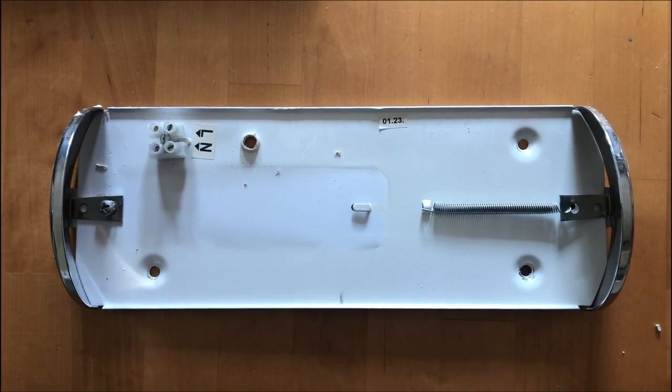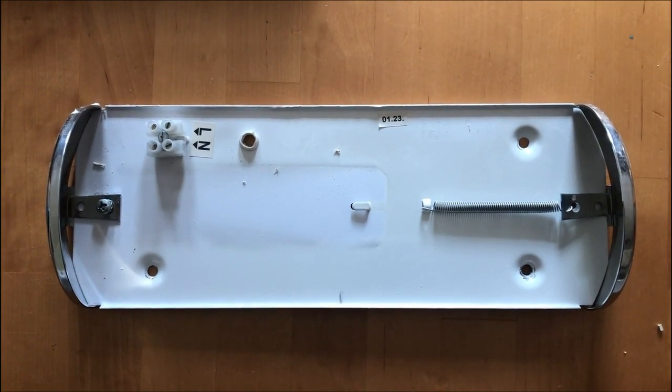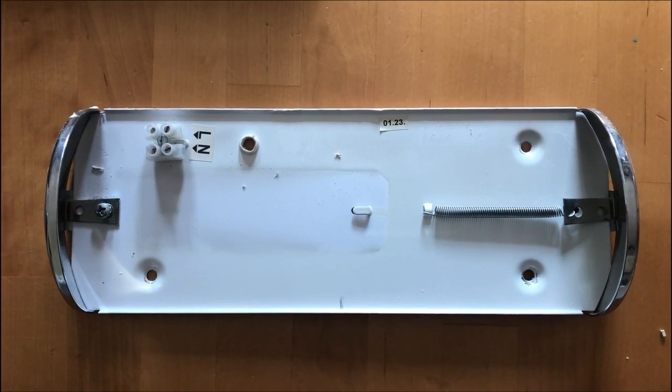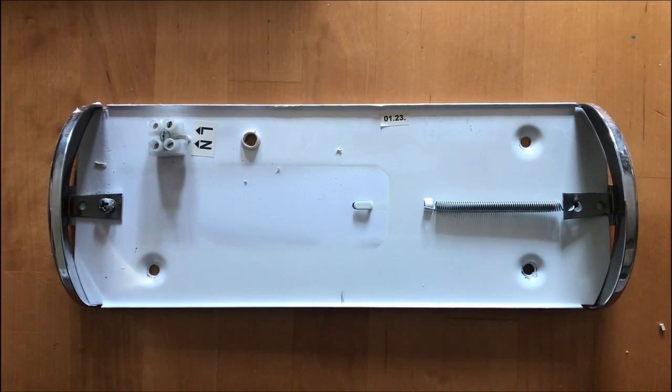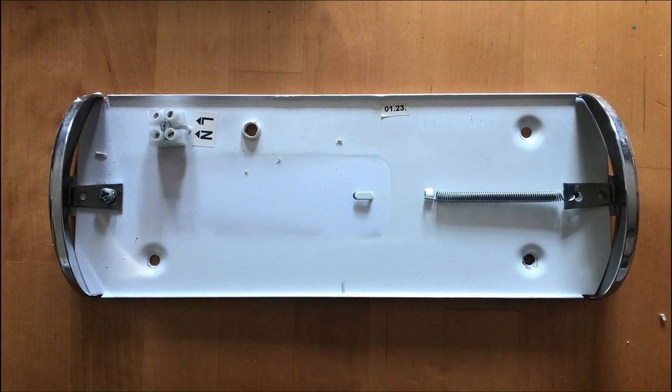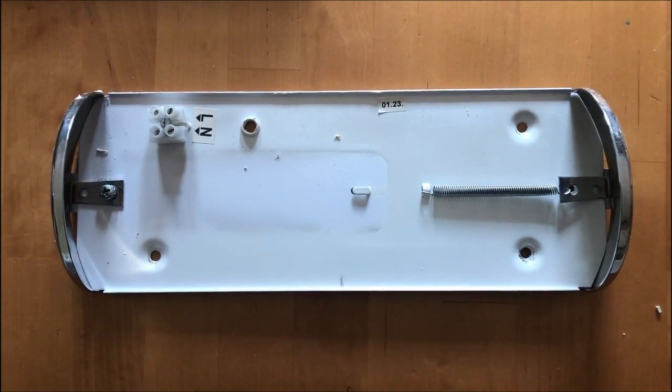And now I've removed all of the components. I've kept the original terminal block in the top left-hand corner. And on the right-hand side you can see the spring clip. The spring has to stay there in order to keep the glass diffuser in place.